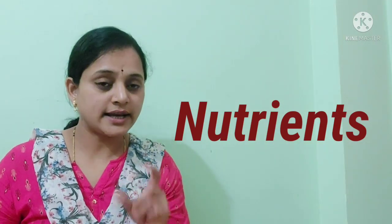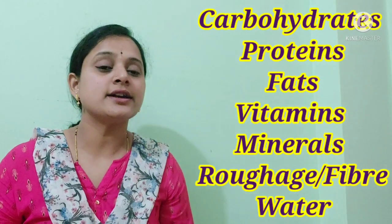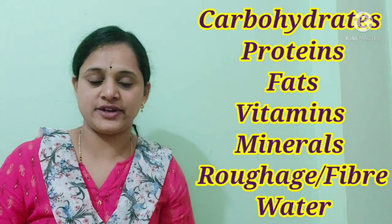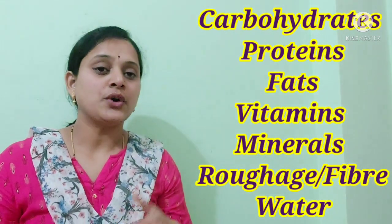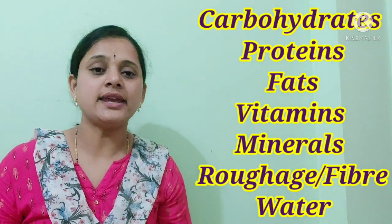A diet has certain components which are essential for our growth and development — those are called nutrients. We shall study different types of nutrients: carbohydrates, protein, fat, vitamins, minerals, water, and roughage. In this video we are going to study all of these one by one.